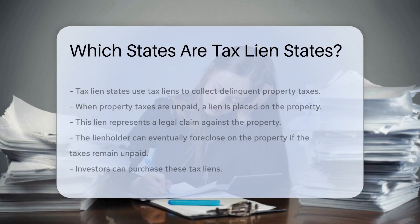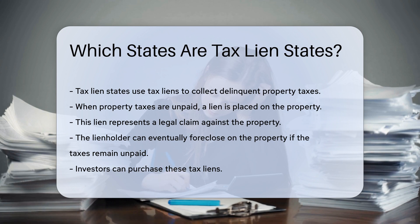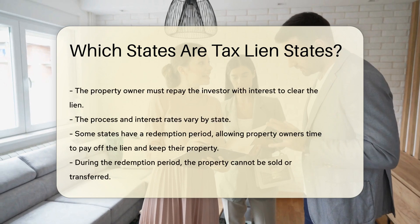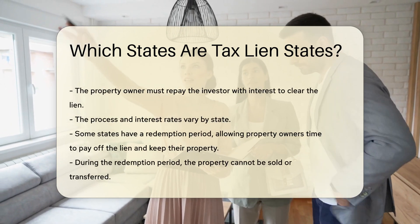Tax lien states use tax liens to collect delinquent property taxes. In these states, when property taxes are unpaid, a lien is placed on the property. This lien represents a legal claim against the property. The lienholder can eventually foreclose on the property if the taxes remain unpaid. Investors can purchase these tax liens, and the property owner must repay the investor with interest to clear the lien.